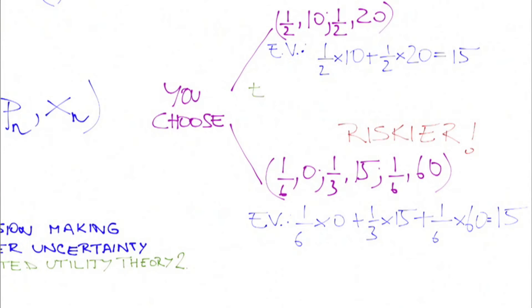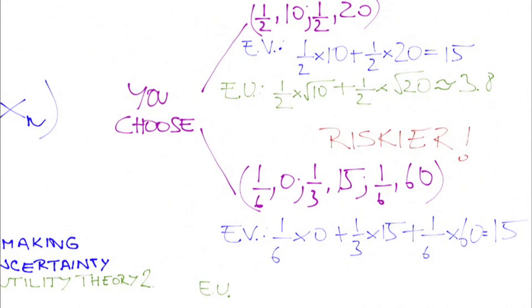Then an expected utility maximizer would compare these two lotteries by comparing his expected utility. We calculate expected utility by multiplying the utility of each outcome by its probability and summing these numbers. Comparing the expected utilities of the two options, we find that the riskier lottery has a lower expected utility. That is because square root of x is a utility function that exhibits risk aversion, as we will see later.